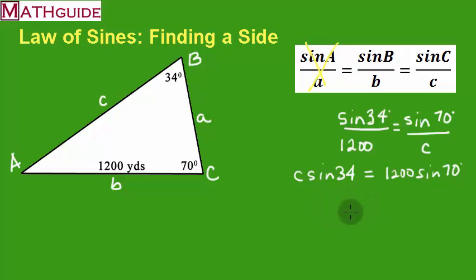So how do I solve for C? I'm going to divide both sides by the sine of 34 to get C alone. So I'm going to take this 1,200 sine of 70 degrees, and I'm going to divide it by the sine of 34.